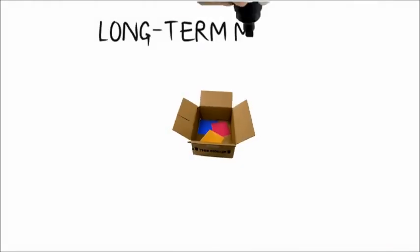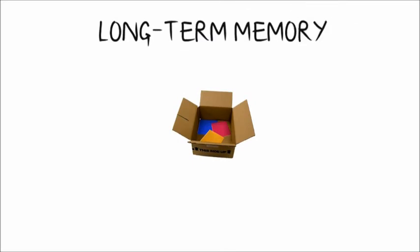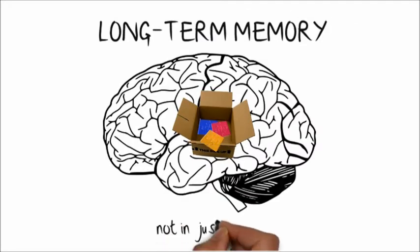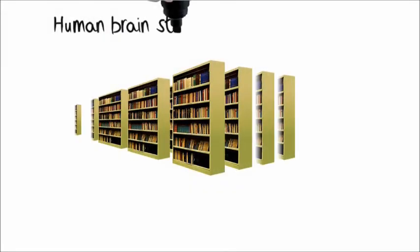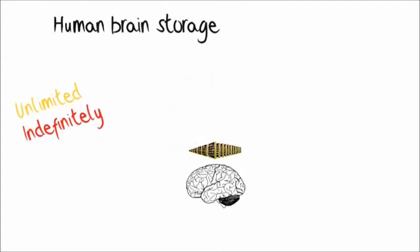These permanent memories constitute our long-term memory, which in contrast to the popular view, is not stored just in one part of the brain, but each component of memory is stored where it was originally encoded. The human brain can store almost unlimited amounts of information indefinitely.